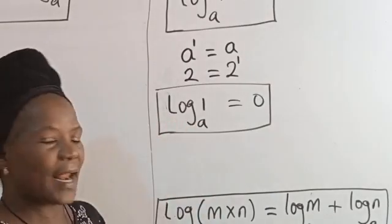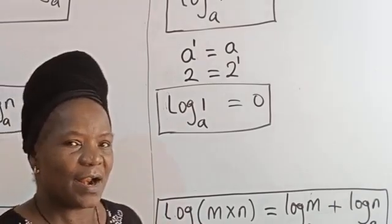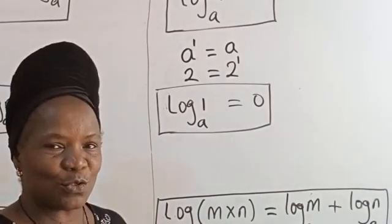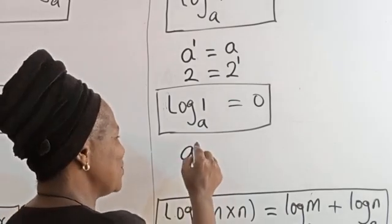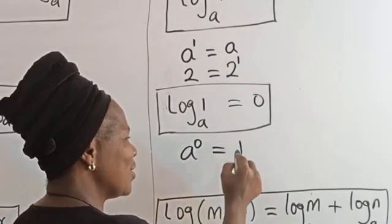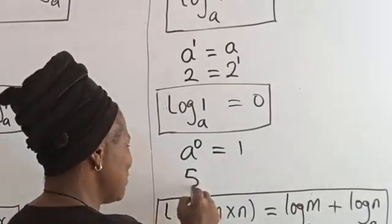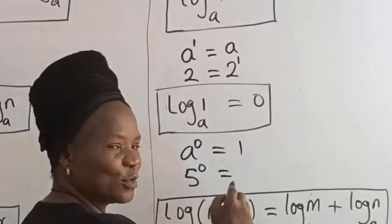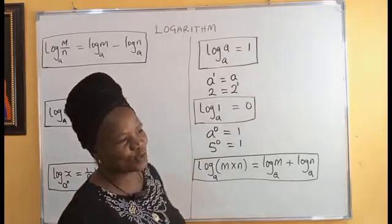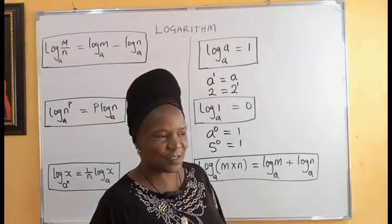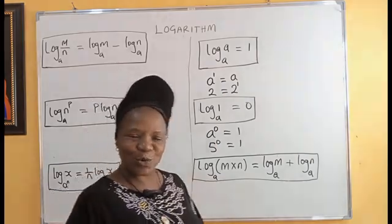Log of 1 in base A is equal to 0, because any number raised to power 0 is equal to 1. A raised to power 0 is equal to 1. For example, 5 raised to power 0 is 1, 2 raised to power 0 is 1, and 100 raised to power 0 is 1.